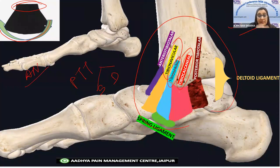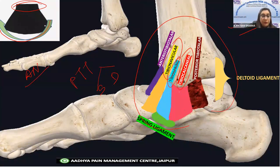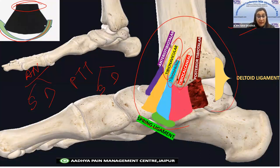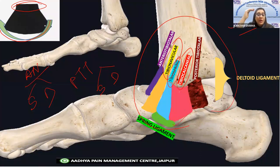The ankle ligaments on the medial side are collectively called the deltoid ligament complex. It contains many ligaments. Starting with the superficial component: you have tibio-calcaneum, which goes from the medial malleolus to the calcaneum up to the sustentaculum tali. Then you have the tibio-spring ligament.